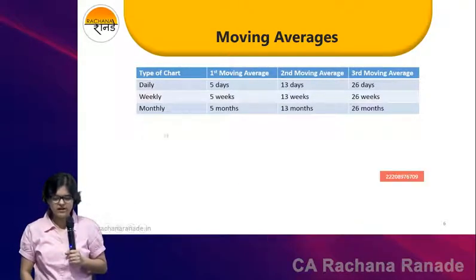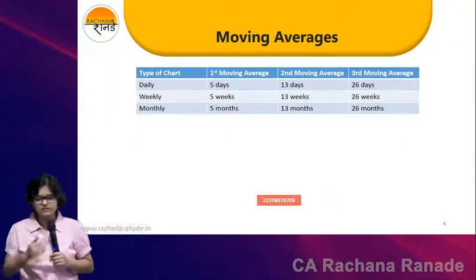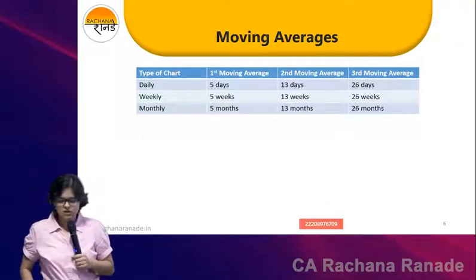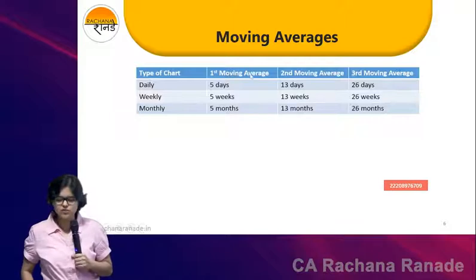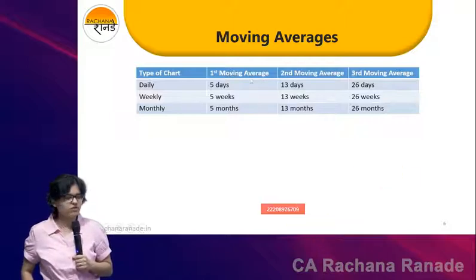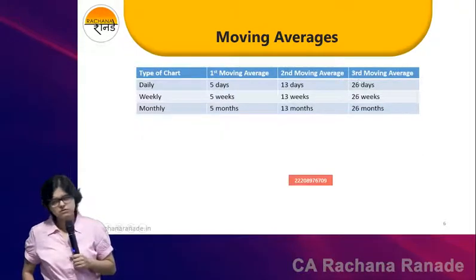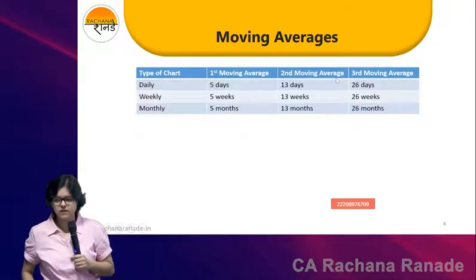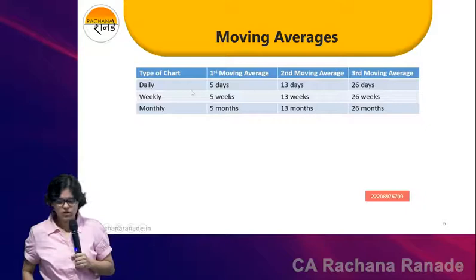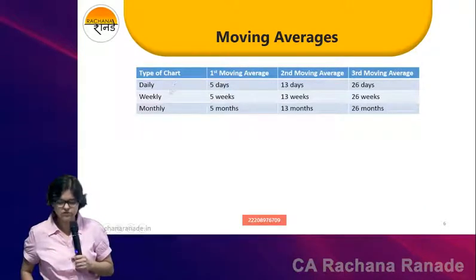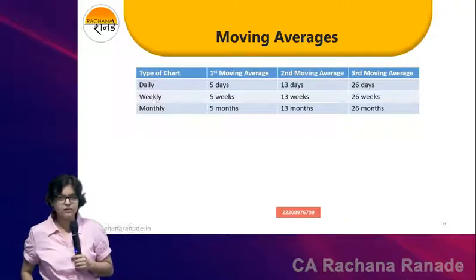Let me write down vertically: daily, weekly, monthly — abbreviated as D, W, and M. Next, write down as column headings: 1st Moving Average (MA), 2nd MA, and 3rd MA. D for daily, W for weekly, M for monthly.